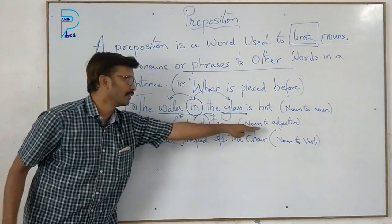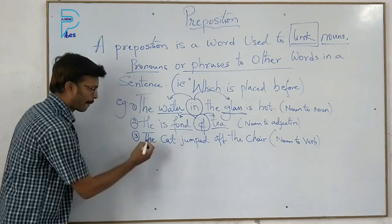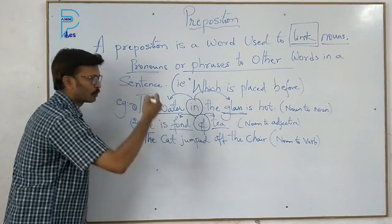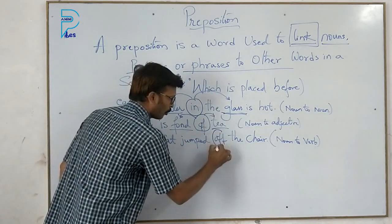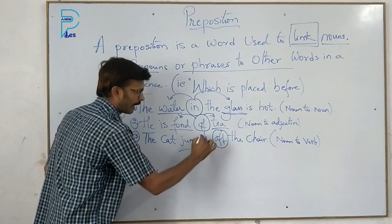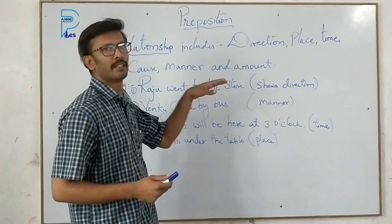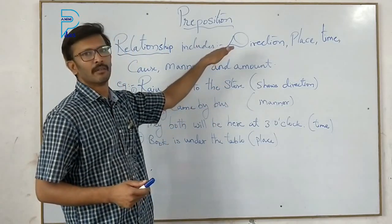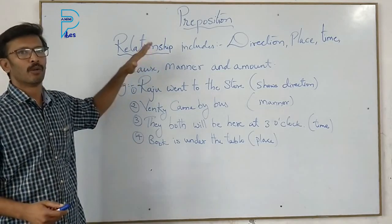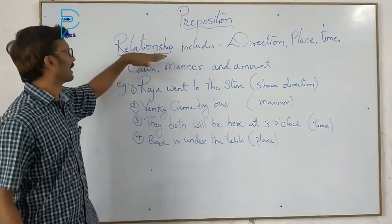In the third example, let us learn which links a noun to a verb: 'The cat jumped off the chair' — 'off' is the preposition where 'jumped' is a verb, and it is linking a verb to a noun. So, as stated, prepositions show the relation between a noun, pronoun, or any other phrase in the sentence.